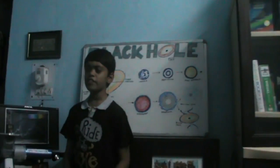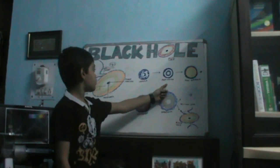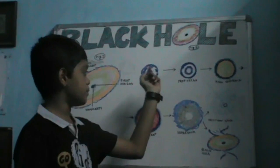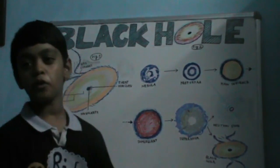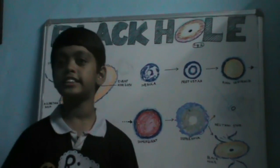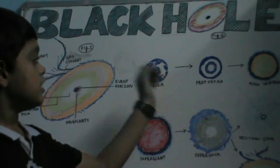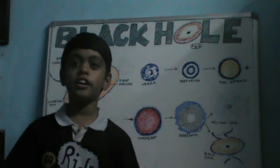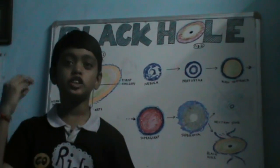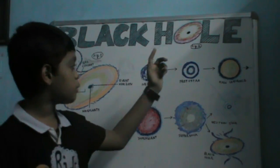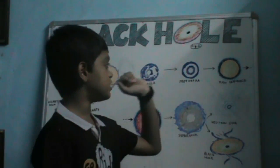A black hole is formed when a super giant star dies in a supernova. First, a protostar is formed from a cloud of interstellar material, also called a nebula. The protostar then heats up and fusion reaction begins. The luminosity of the protostar increases to several hundred times that of the sun. After that, it cools down and reaches the main sequence.